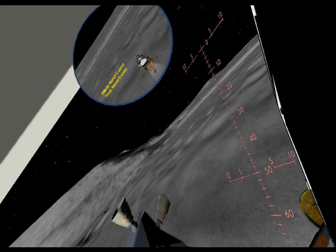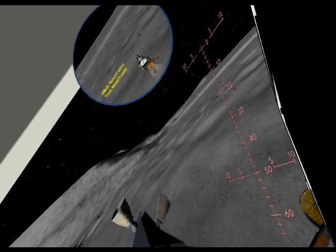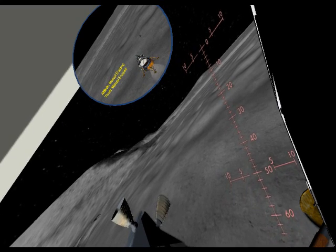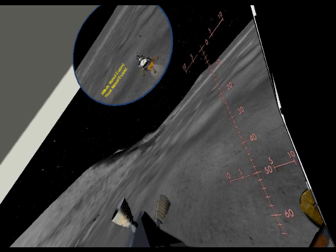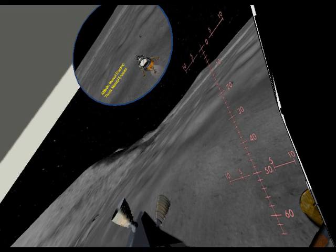Down at 20 feet per second. Down at 15 feet per second. Down at 10 feet per second. Down at 5 feet per second. We can see our shadow.